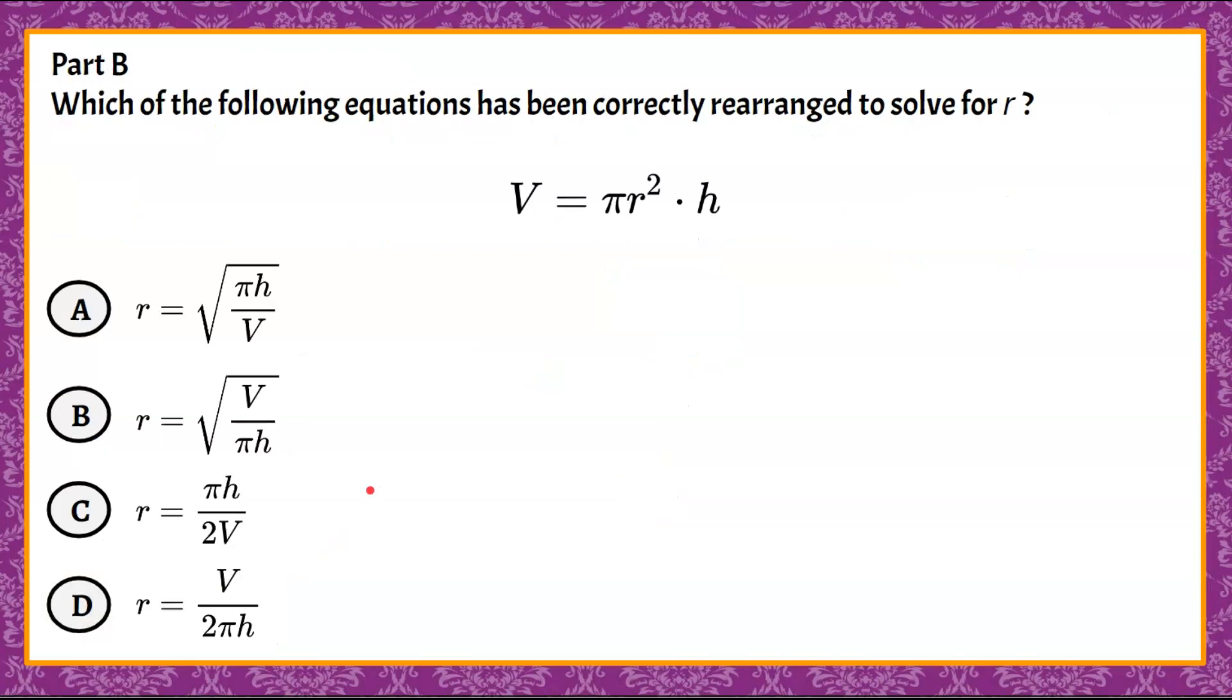Now let's look at part B. Part B asks us which of the following equations has been correctly rearranged to solve for r in this volume formula for a cylinder. So we're looking for radius, which is r, and that is in this term right here, r squared. So we're looking to get r squared alone first and then solve for r and pick which one of these it belongs to.